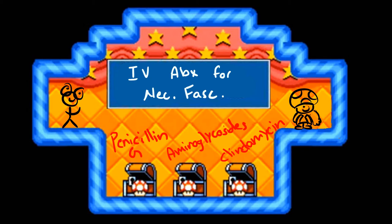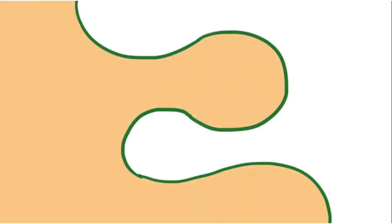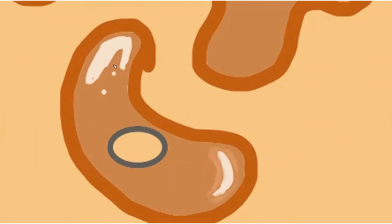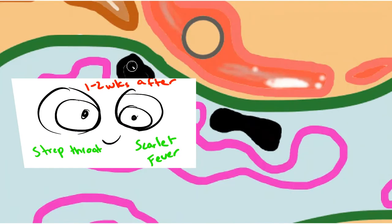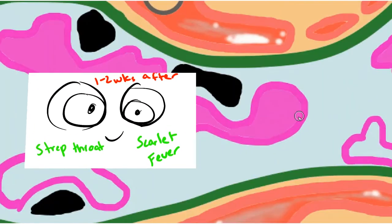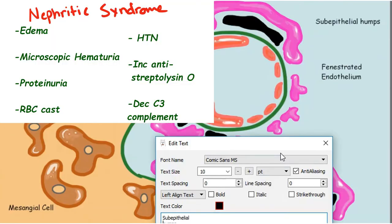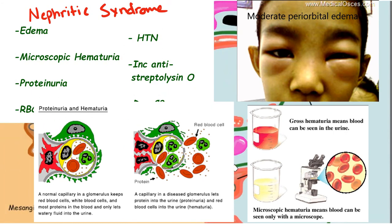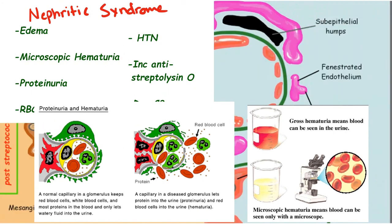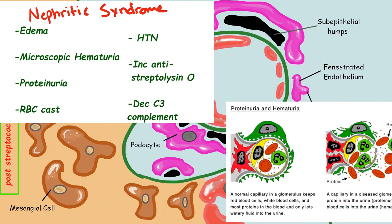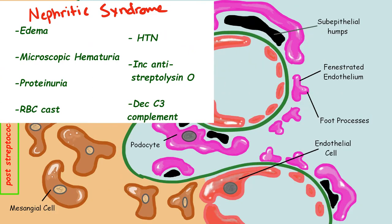All the previous problems from group A beta-hemolytic strep can lead to acute post-streptococcal glomerulonephritis. It presents one to two weeks after a strep throat or scarlet fever infection as a typical nephritic syndrome with edema, microscopic hematuria, proteinuria, red blood cell casts on UA, and hypertension, along with increased anti-streptolysin O and decreased C3 complement levels.